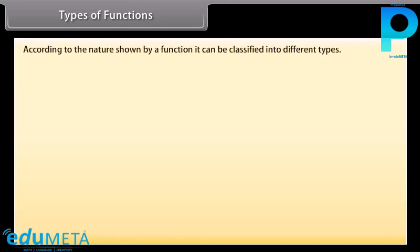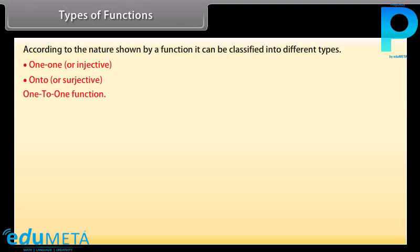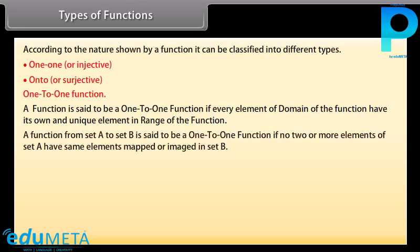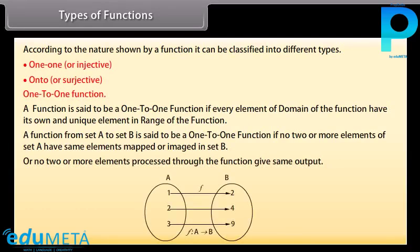Types of functions: According to the nature shown by a function, it can be classified into different types: one-to-one or injective, and onto or surjective. A function is said to be one-to-one if every element of the domain has its own unique element in the range. A function from set A to set B is one-to-one if no two or more elements of set A have the same image in set B, or no two elements processed through the function give the same output.